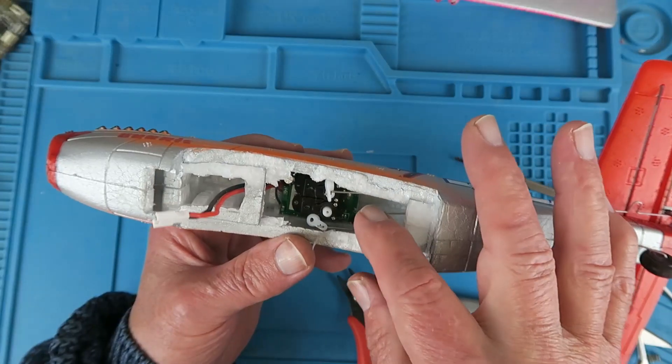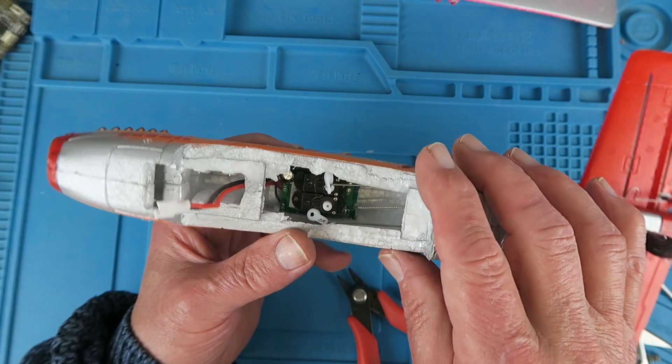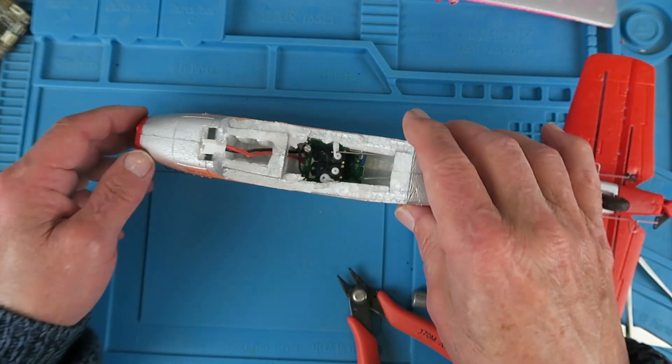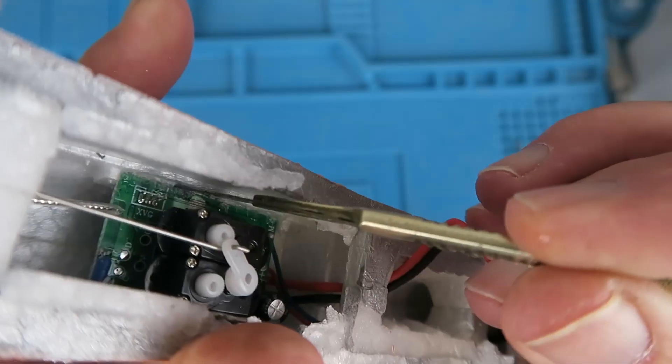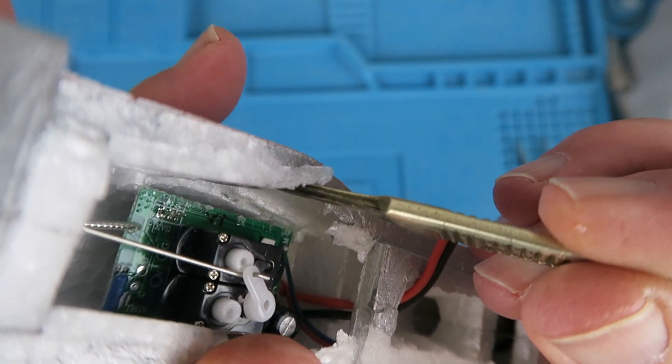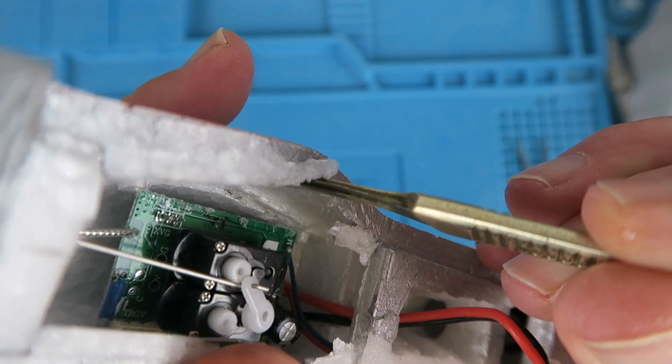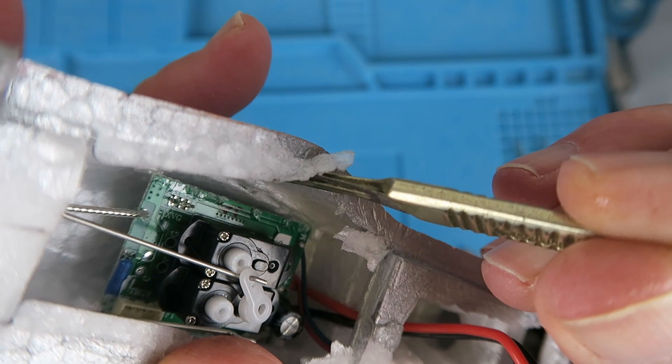The next challenge will be to get the little board out itself, which appears to be glued in using the same sort of flexible glue. As you can see by putting the scalpel down the side of the board, the flexible glue can be separated. Do that down both sides and we can remove the flight controller.